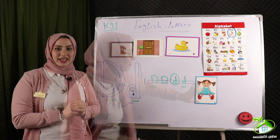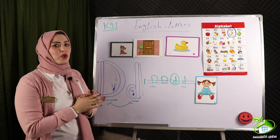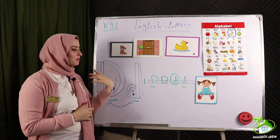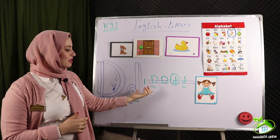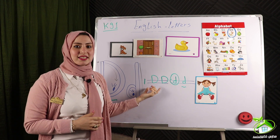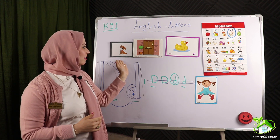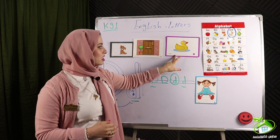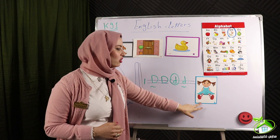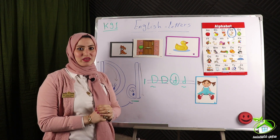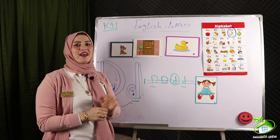Finally, we have learned letter D with its sound — D, D, D. D for dog. D for door. D for duck. D for doll. I'm so happy to be with you today. Goodbye, see you!